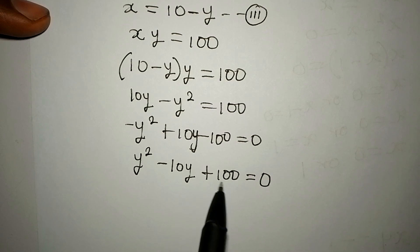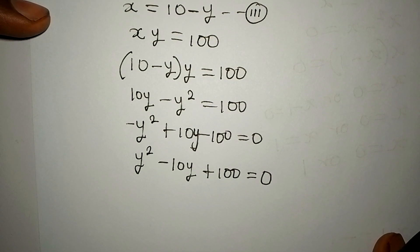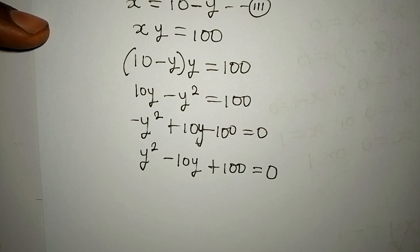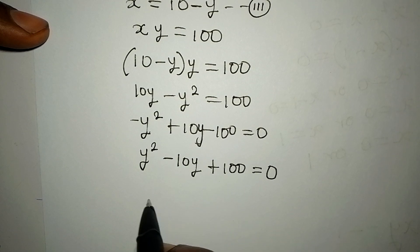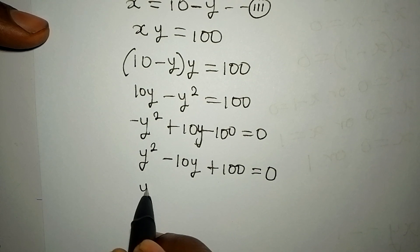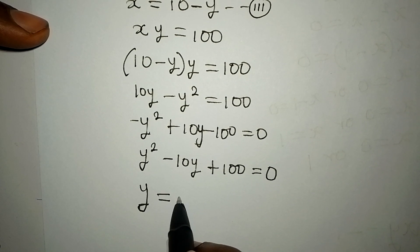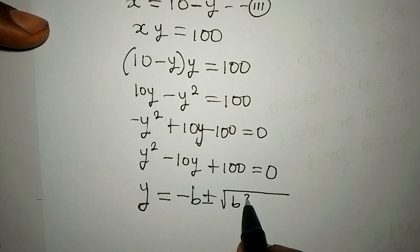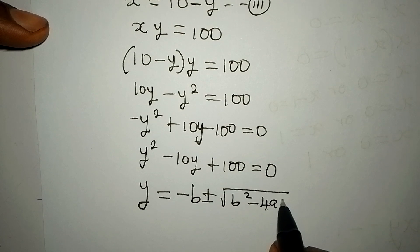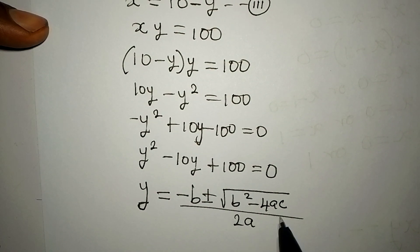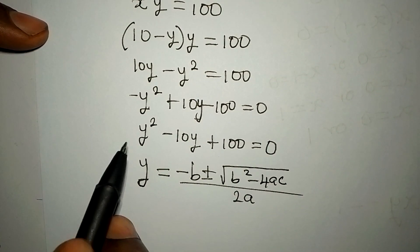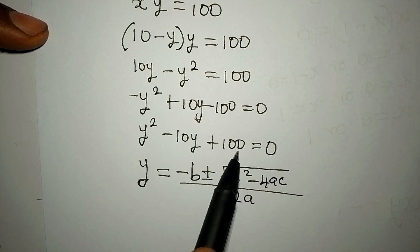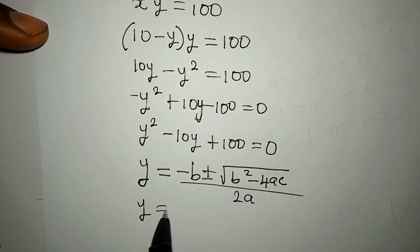Now I'll solve this quadratic equation using the formula method. y equals minus b plus or minus the square root of b² minus 4ac, all over 2a. Here a is 1 (the coefficient of y²), b is minus 10, and c is 100.